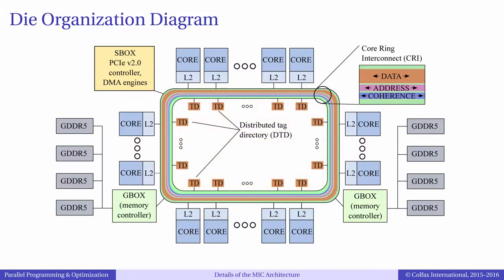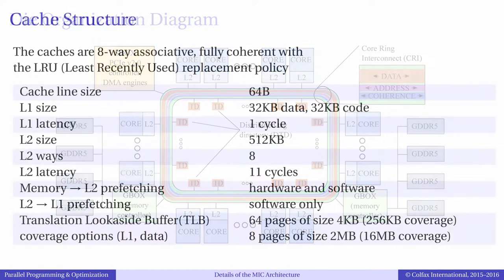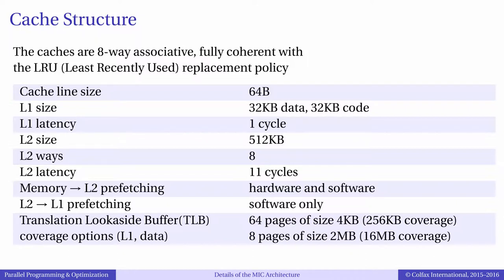Each core has a slice of the Level 2 or L2 cache with hardware prefetcher. Together, the caches of all cores form a fully coherent aggregate cache. Inside the core, the Level 2 cache is in turn cached by a Level 1 or L1 cache. This memory hierarchy is extremely important from a programmer's point of view, because data locality and better memory access patterns can dramatically improve the performance of parallel applications.